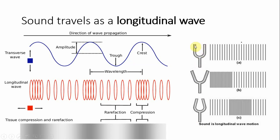These tuning forks show us how sound waves are actually created. When our tuning fork is at rest, there's no vibration. As I hit it with that little hammer, the forks vibrate out, creating compression, then go back, creating rarefaction. Due to their different lengths, these tuning forks vibrate at a specific frequency, creating a specific pitch.